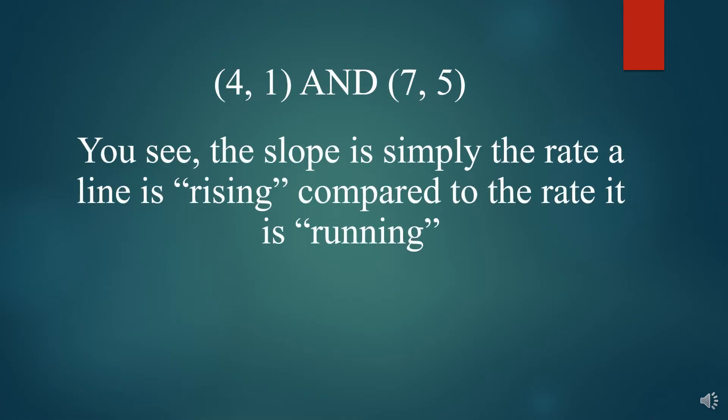You see the slope is simply the rate of a line rising compared to the rate that it's running, or how much it's going up or down compared to how much it's going over to the right. Now what that means on a graph is that it's the change in the y going up or down compared to or over the change in the x.